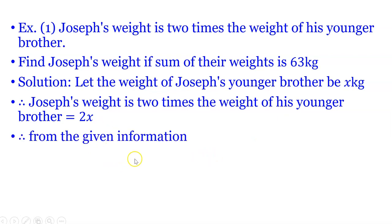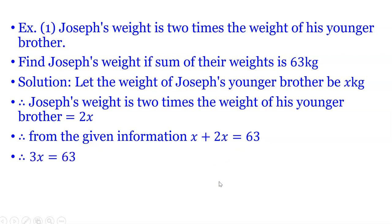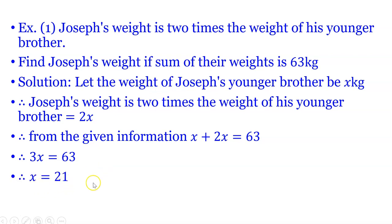Therefore from the given information, the sum of their weights is 63. Therefore x plus 2x is equal to 63. x plus 2x gives 3x, so 3x is equal to 63. Dividing both sides by 3, you will get x is equal to 21.